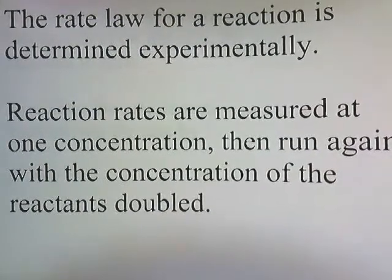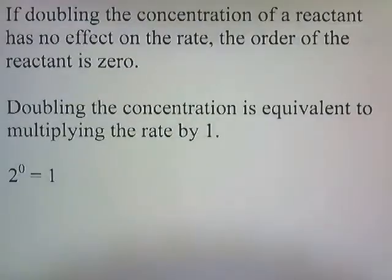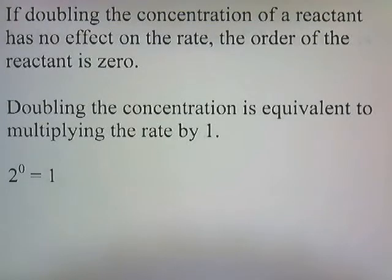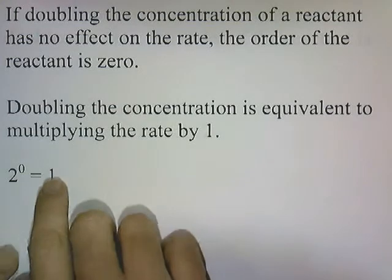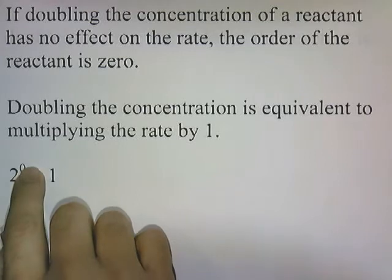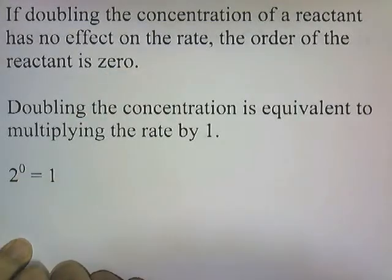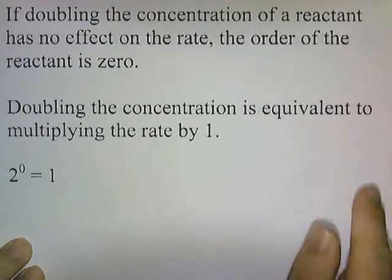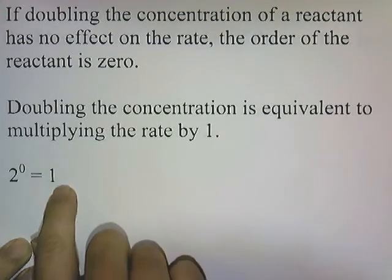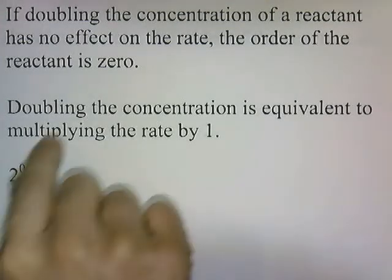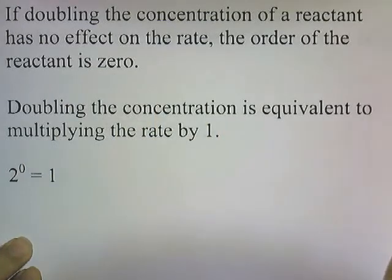Here's the first concept. If doubling the concentration of a reactant has no effect on the rate, the order of the reactant is 0. Doubling the concentration is equivalent to multiplying the rate by 1, and 1 is the same as 2 to the 0 — that's where the 0 comes from. When you multiply something by 1 there's no change, so it's a zero order for the reactant.